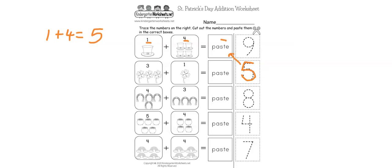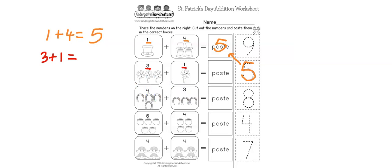Let's do another one: 3 plus 1. 3 plus 1 equals — we are going to count the flowers: 1, 2, 3, 4. So our number is 4, and we write the number 4 over here.